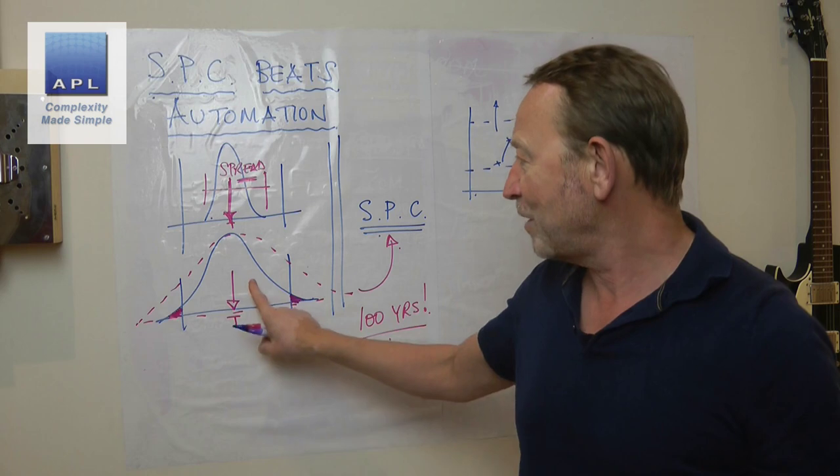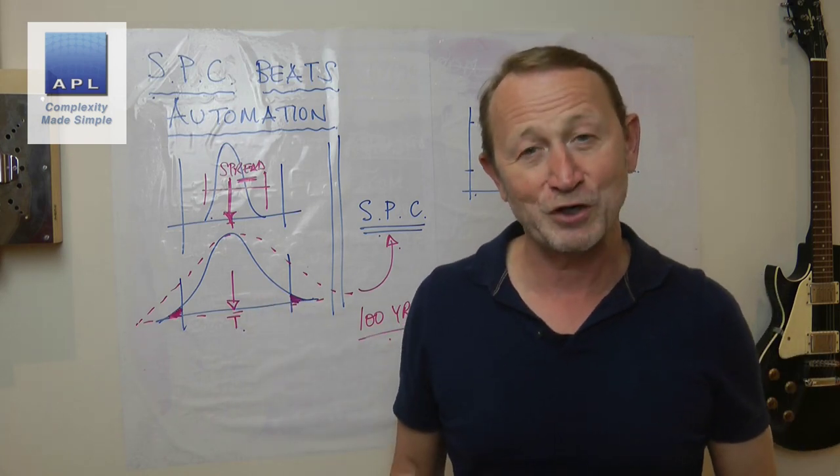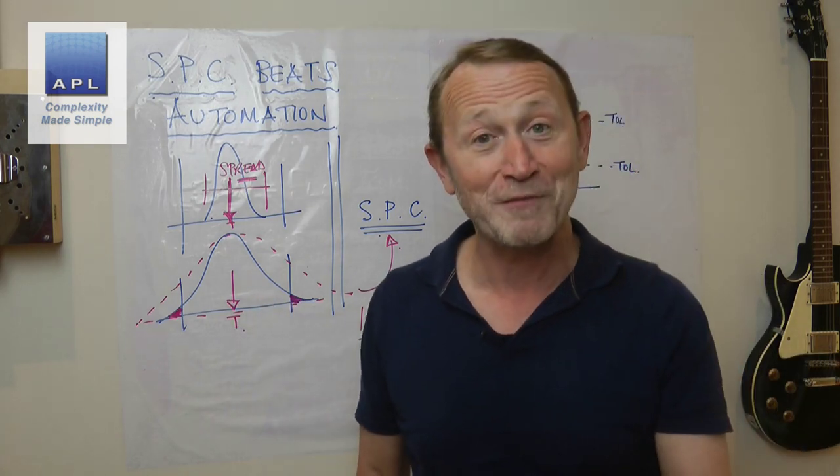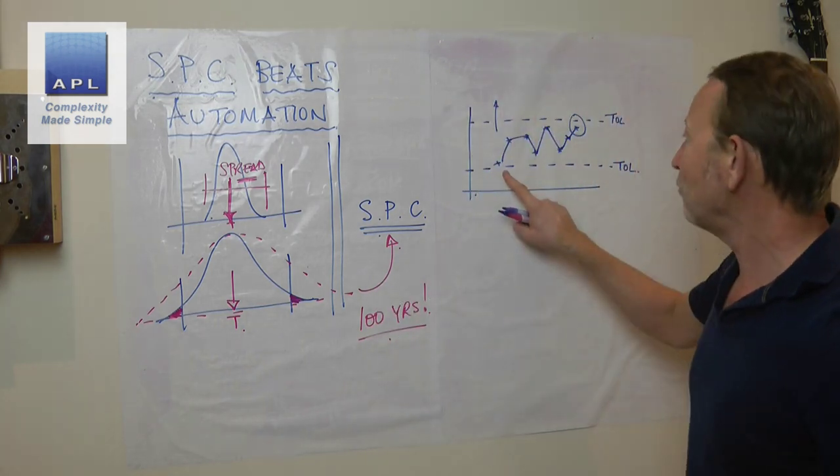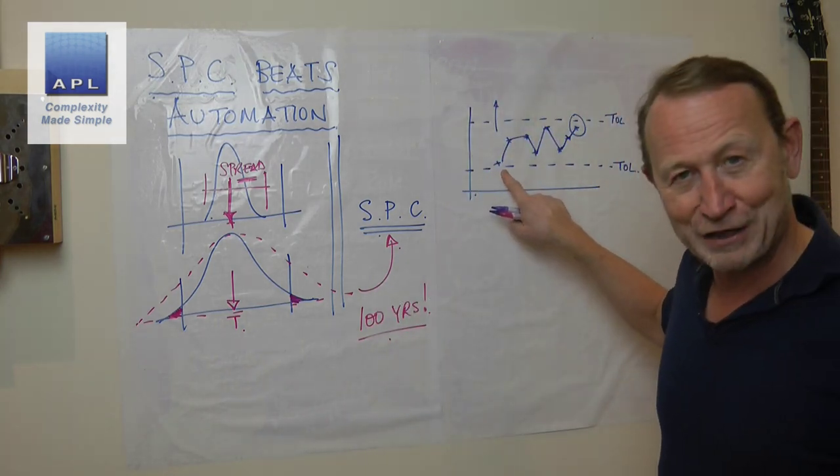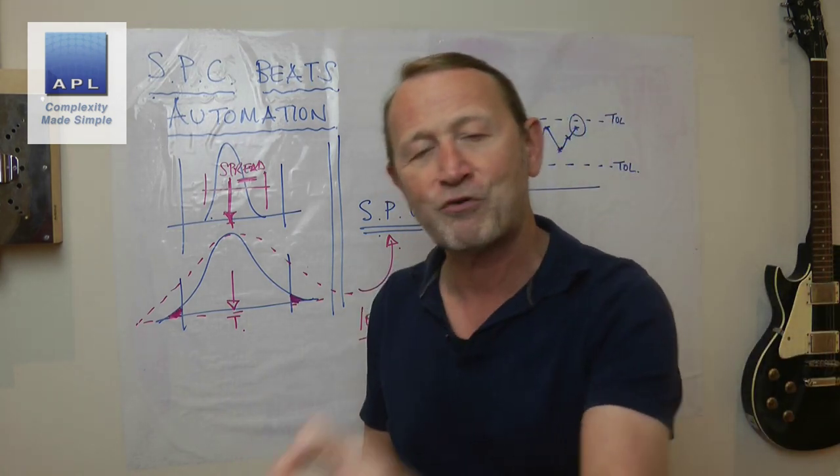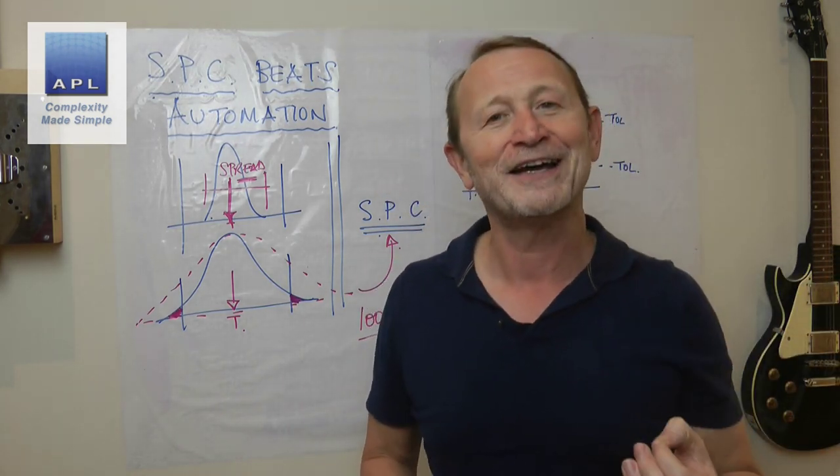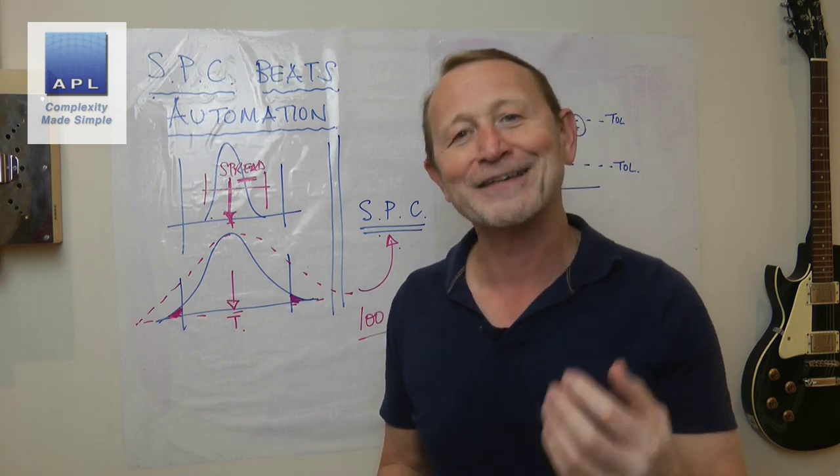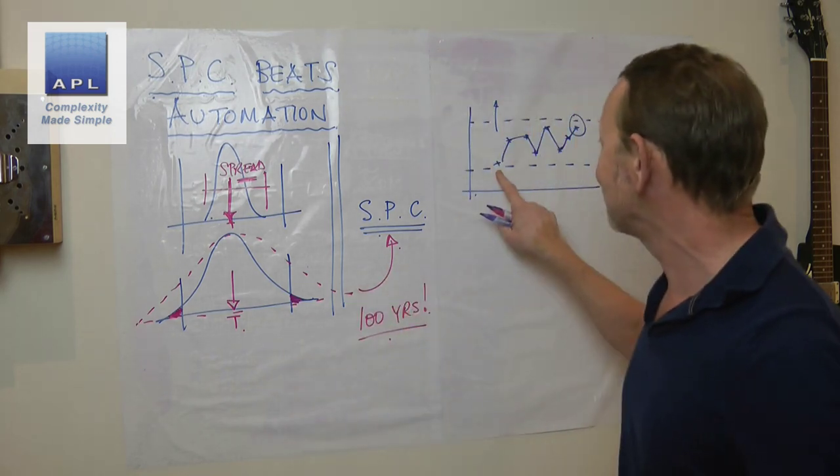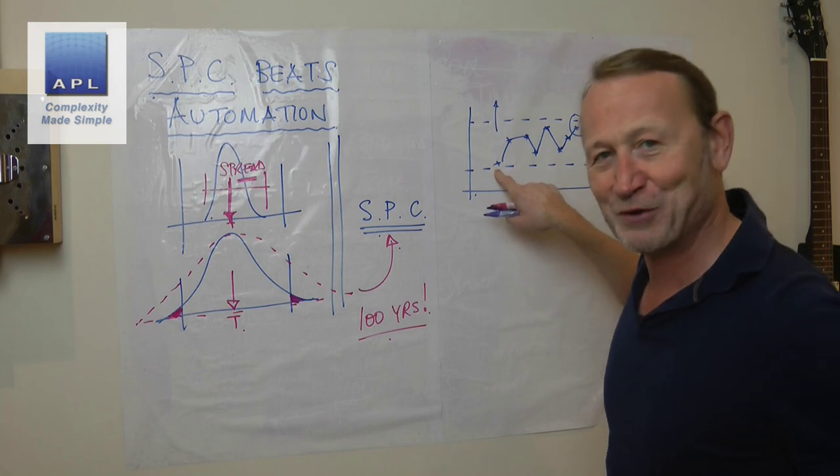Now, how about if you took that situation of making it worse and you automated it? So you don't let the operator look at every individual result. You get the machine to probe automatically every result and then make an adjustment automatically when it sees a data point.